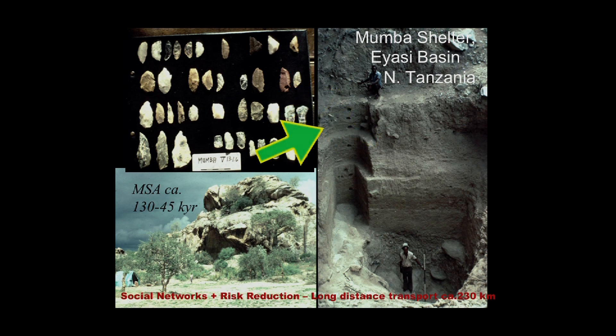The geometric shapes appear at perhaps 50,000 years ago in this upper area. Right the way through the sequence, but especially in the upper part, this site is in northern Tanzania, but the obsidian is coming from Kenya — about 230 kilometers away.